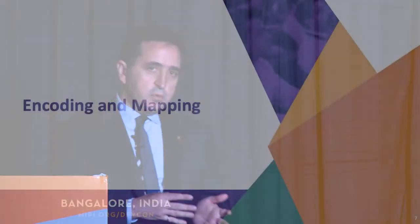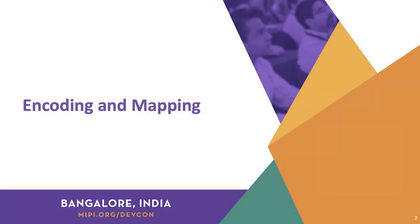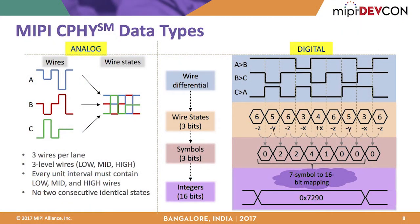Transitioning to more advanced topics: the encoding and mapping functions in more detail, from an intuitive point of view. Starting with some definitions — wire states. Because of the rules of not creating equal voltages on the wires, you end up with six different combinations called wire states. A wire state is the combination of voltage values on the three wires together.